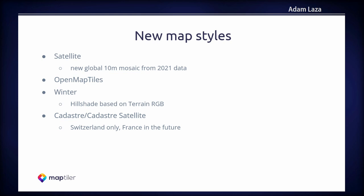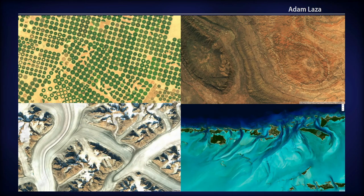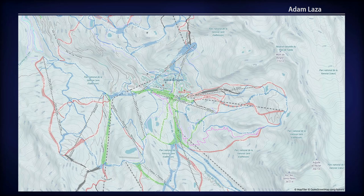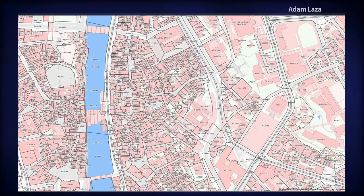The last thing we added in the latest versions are new map styles. Satellite is not really a new map style, but we updated the data — now you can access satellite with 10-meter resolution from 2021 data. We added an OpenStreetMap style, a WinterStyle, and also a Cadastre style, which is now only in Switzerland, but we plan to add other countries. These are some pictures from the satellite map. This is the new OpenStreetMap in the center of Zurich. The WinterMap shows ski slopes as polygons and chairlifts. And this is the Swiss cadastre.